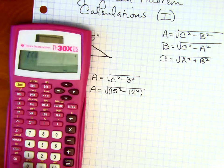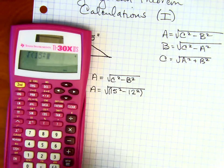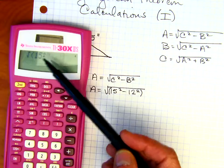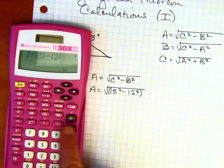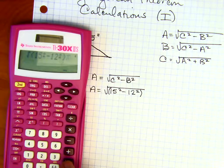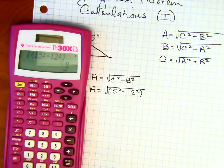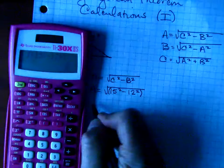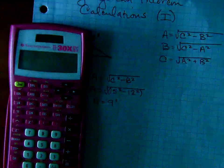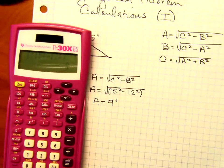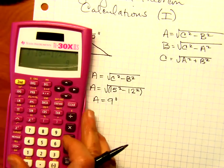Next, we're going to punch in 15 X squared. The X squared button squares it. Minus 12 X squared. I could put a closing. You don't have to. You're going to get the same answer otherwise. And then enter. And in this case, we're going to get 9. And that would be 9 inches.